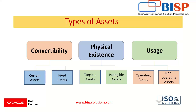The next type is according to usage. Under usage, there are two categories: operating assets and non-operating assets. Operating assets are the assets used in the business for day-to-day operations for the purpose of generating income — examples include accounts receivable and cash. Non-operating assets are not used in the organization for day-to-day operations but still help in generating income and revenue. Examples include marketable securities and short-term investments.